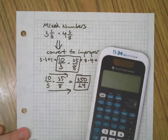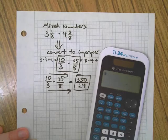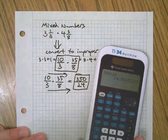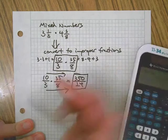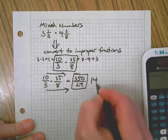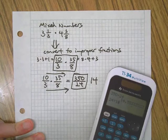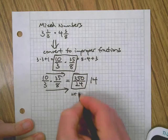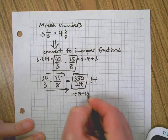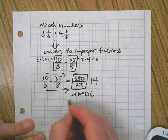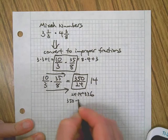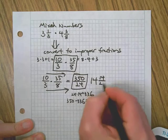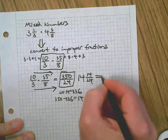Get out my handy dandy calculator. 350 divided by 24—14. It goes in there 14 times. 24 times 14 is 336, which means 350 minus 336 equals 14. So it's 14 with 14 left over, which we can then reduce to 14 and 7 twelfths. Ta-da!